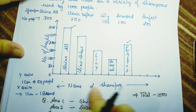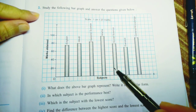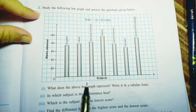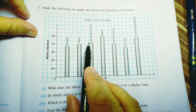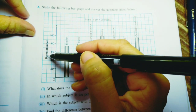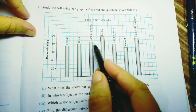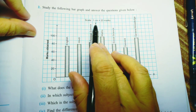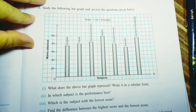We have finished question one. Now question two provides a bar graph which we must read and answer. On the X-axis there are different subjects: English, Hindi, General Science, Maths, Social Science, Sanskrit, and GK. On the Y-axis are marks obtained. The given scale is 1 centimeter equals 20 marks.